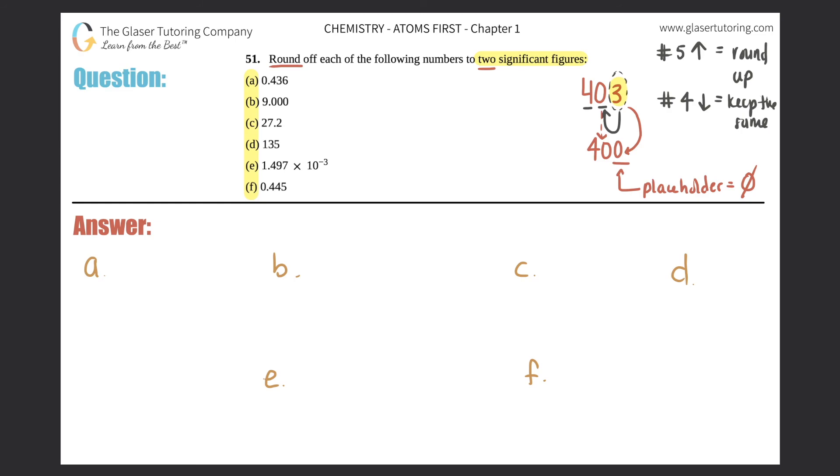Because if I look here, there, there's only one sig fig here, because these would be classified as trailing zeros. So how do I make this number into two sig figs, you would have to put it into scientific notation. So the decimals assumed to be here, I jump one, two,